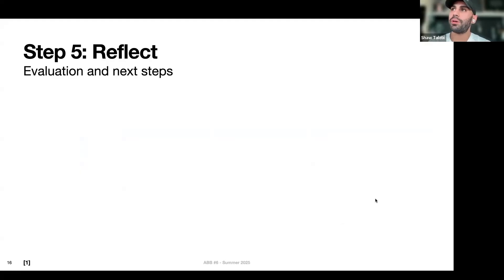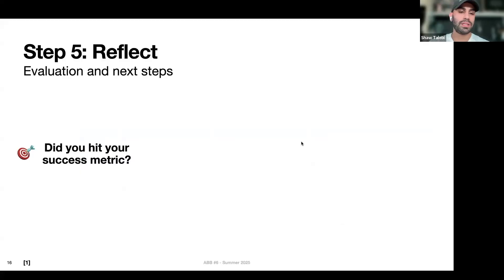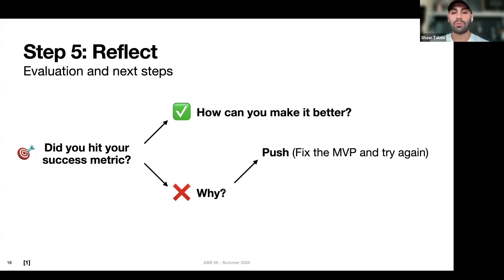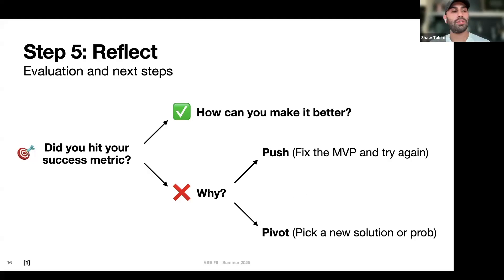Step five — the final step, and probably what people don't spend enough time on — is to reflect and understand what went well and what didn't. When you have the success metric you scoped out, this process is simple: did you hit your success metric or not? It's a binary yes or no. If you did, ask yourself how you can make it better, take it to the next level, and actually start making money from it. If you didn't hit the metric, always ask why and understand what went wrong. If you've identified the root cause, you can push — try to fix the MVP, try again, define another success metric, and hit that. Or you can pivot: pick a new solution or a new problem entirely.